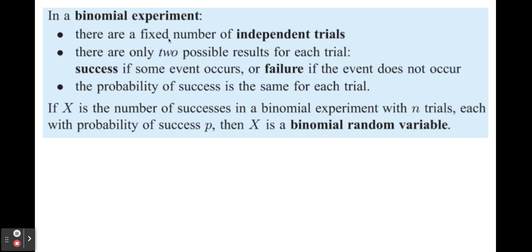Everything needs to be independent trials. For example, if we're flipping a coin 50 times, every flip is independent of the one before. Additionally, the probability of success must be the same every time we try the trial. For flipping a coin, every time we flip it, we have the same probability — 50% — of getting heads.